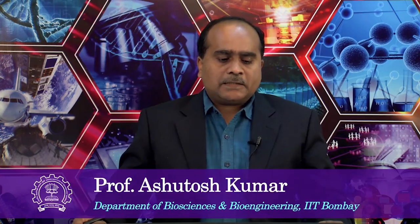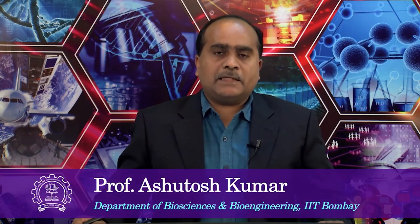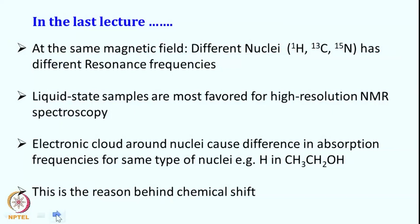In the last lecture, we looked at how, at the same magnetic field, different nuclei such as proton, carbon-13, and nitrogen-15 have different resonance frequencies, and that gives us the possibility to record different spectra for different nuclei in the same sample.